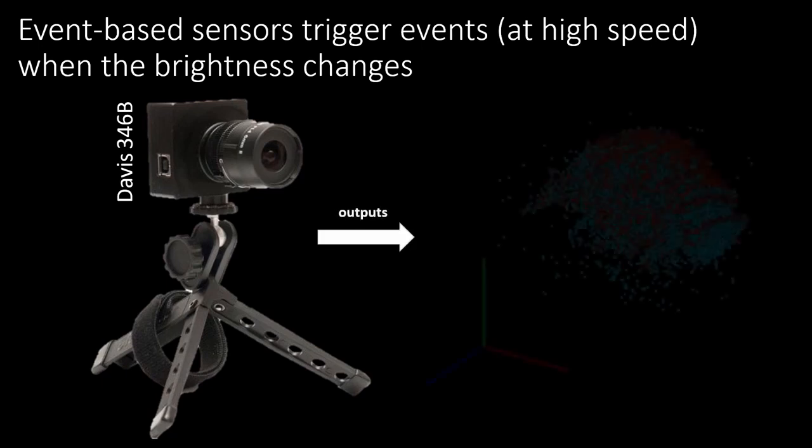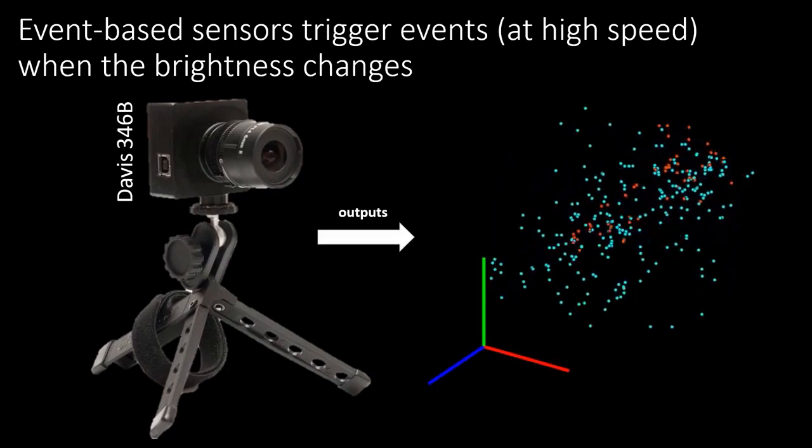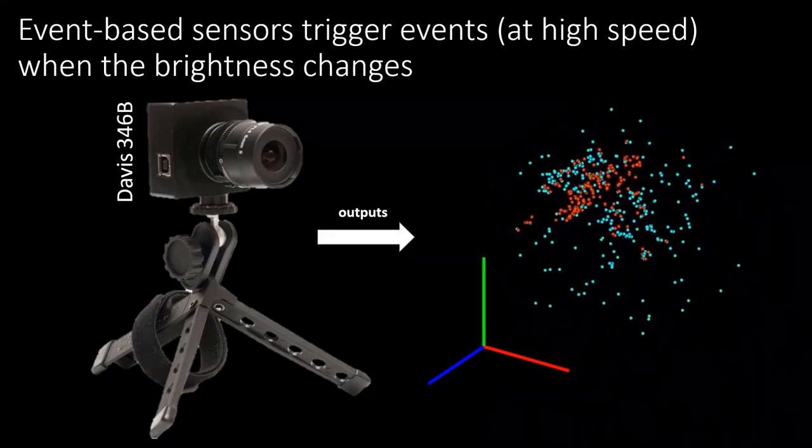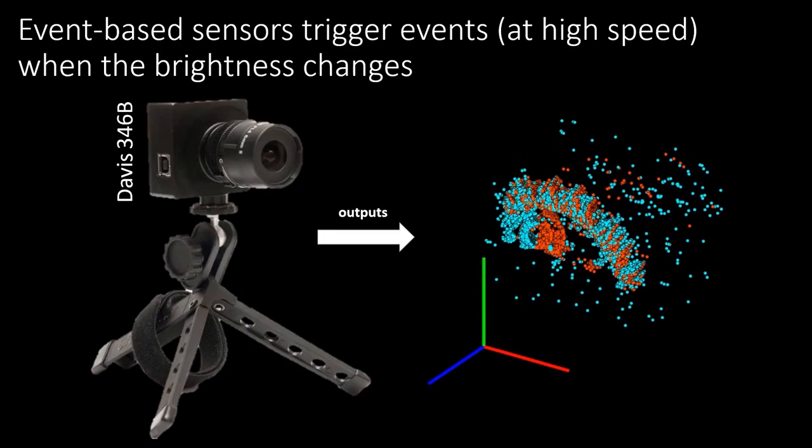In our eye tracking scenario, the event camera only reports information when the eye moves and can stream events millions of times per second per pixel.